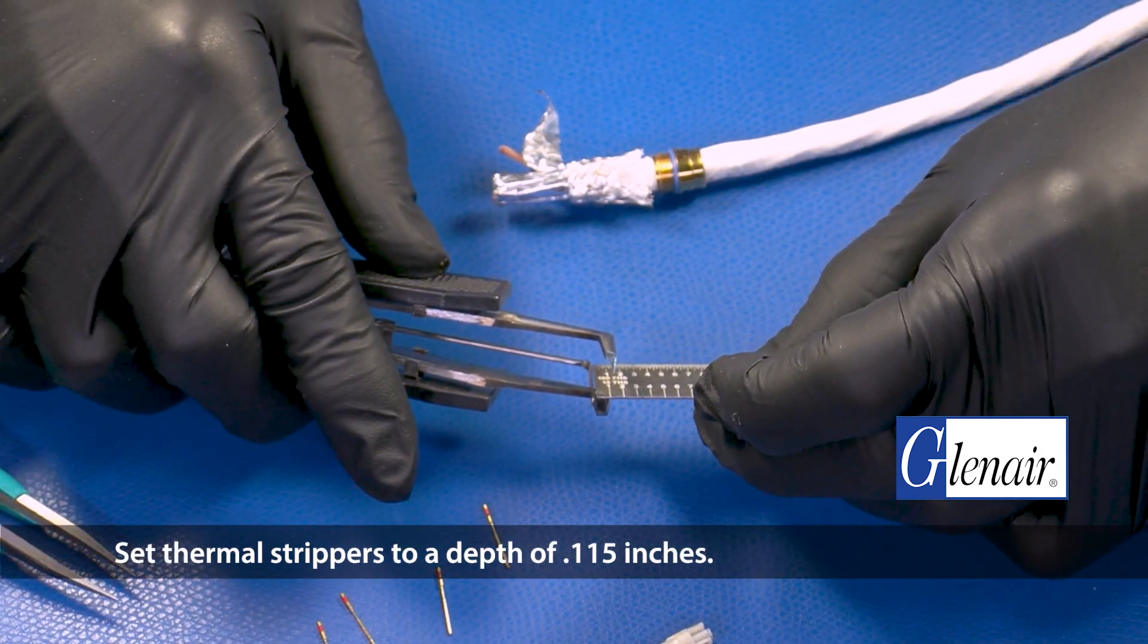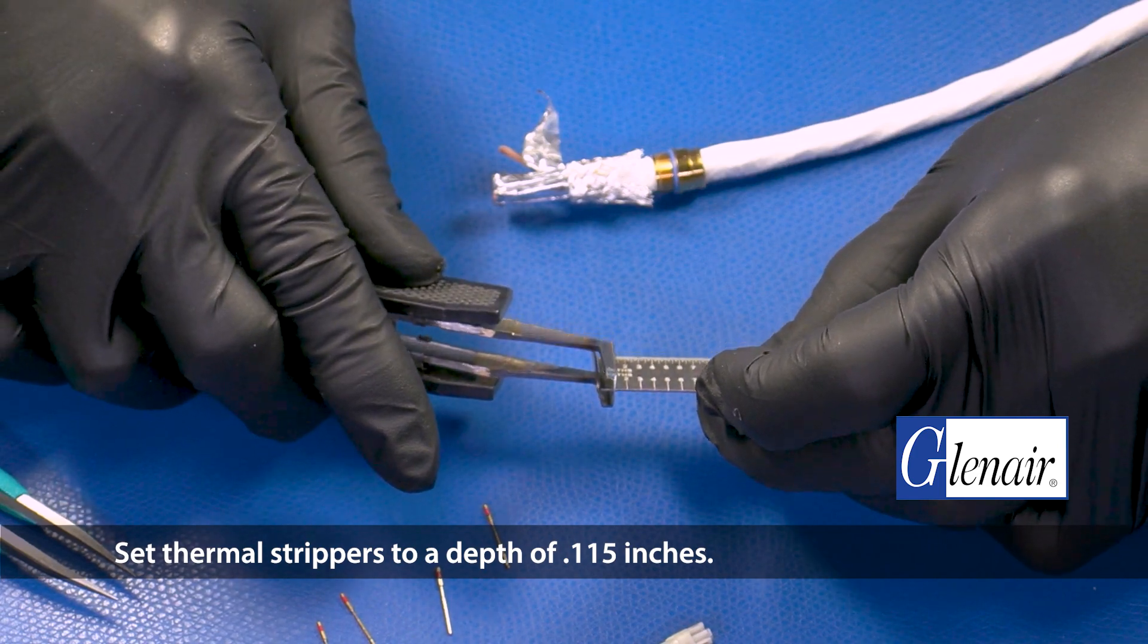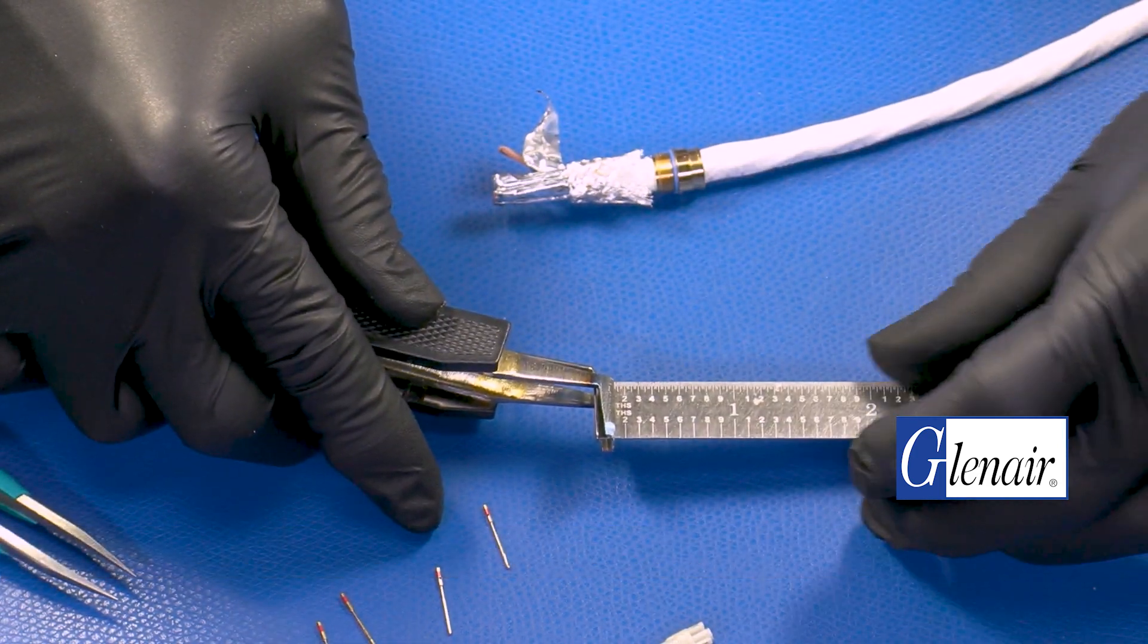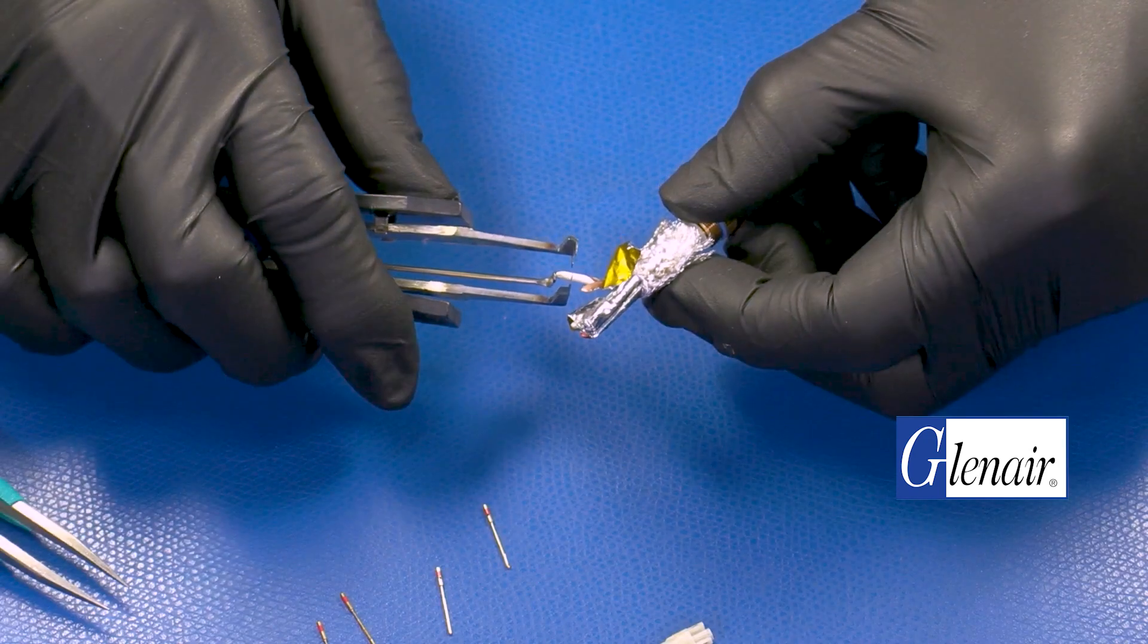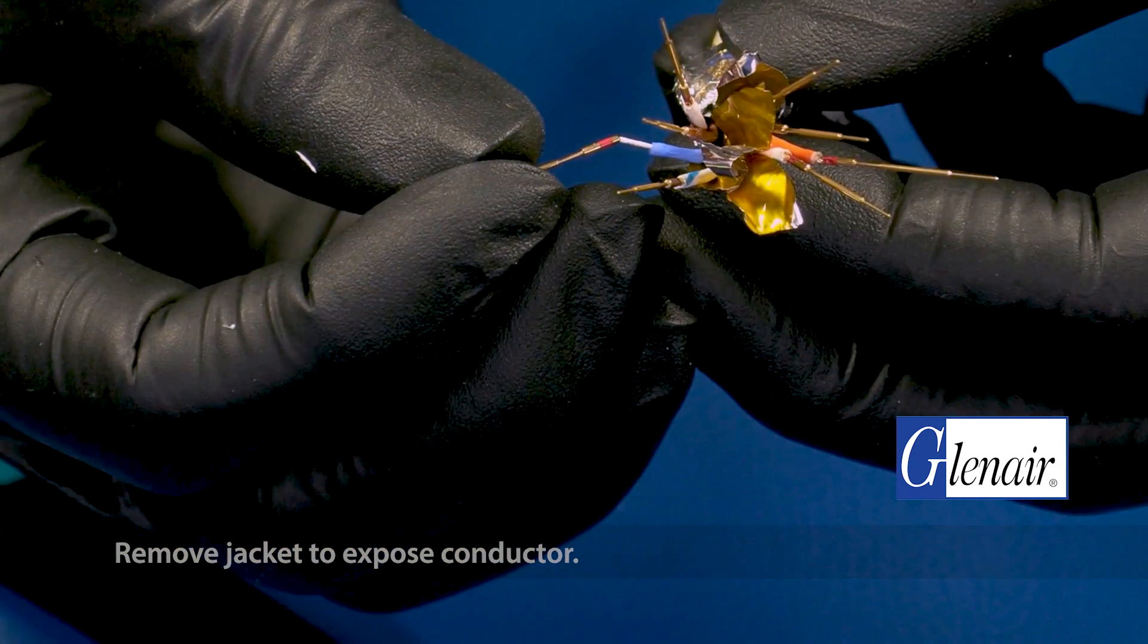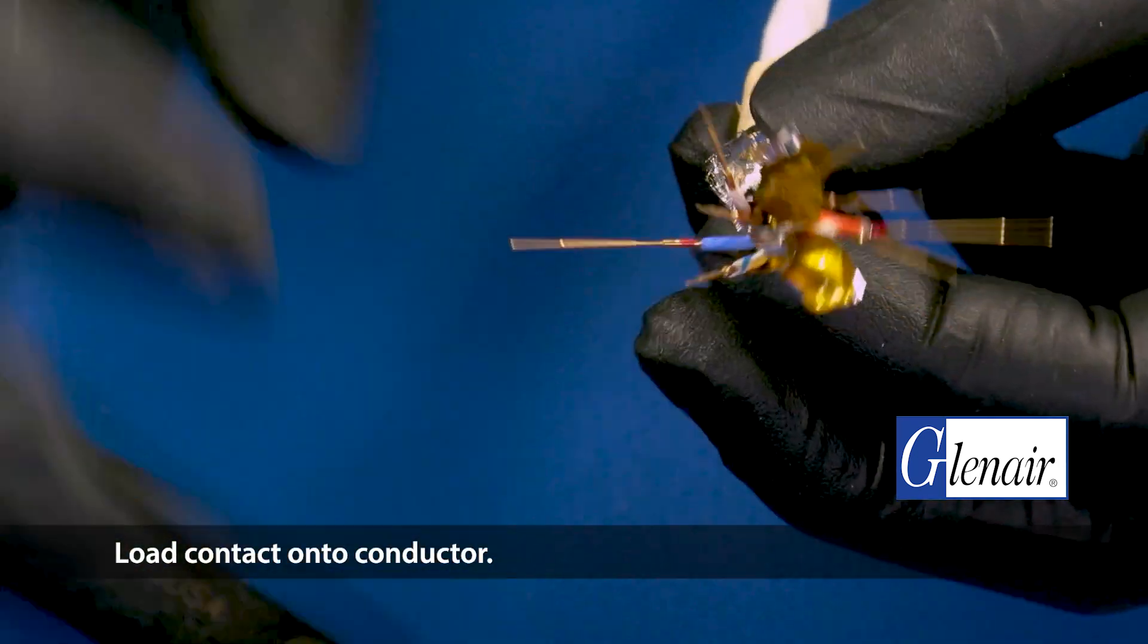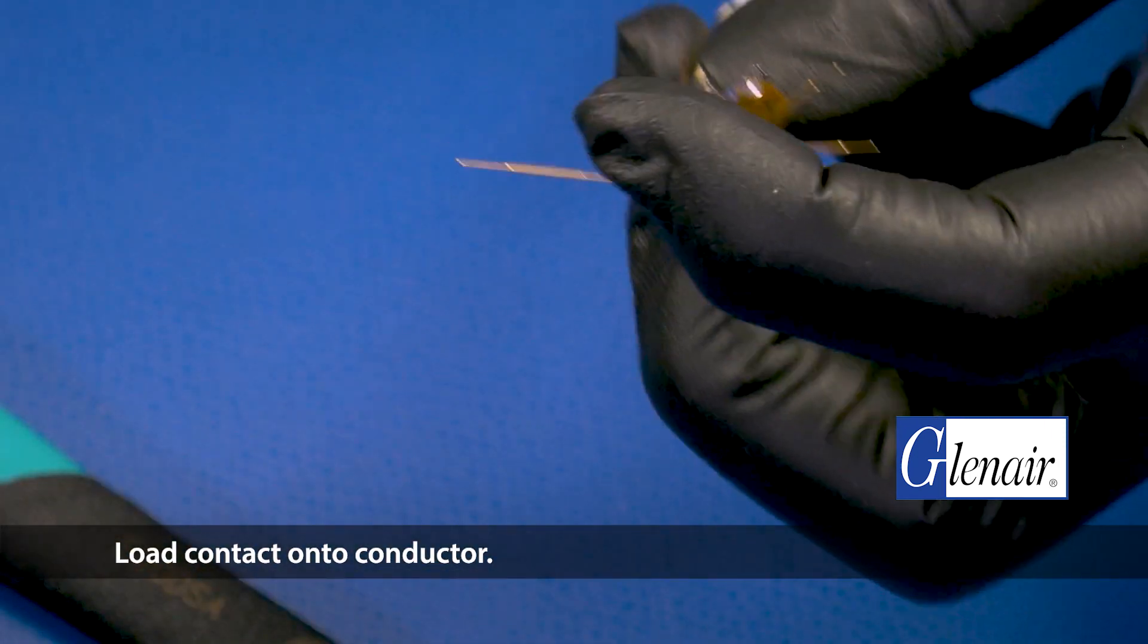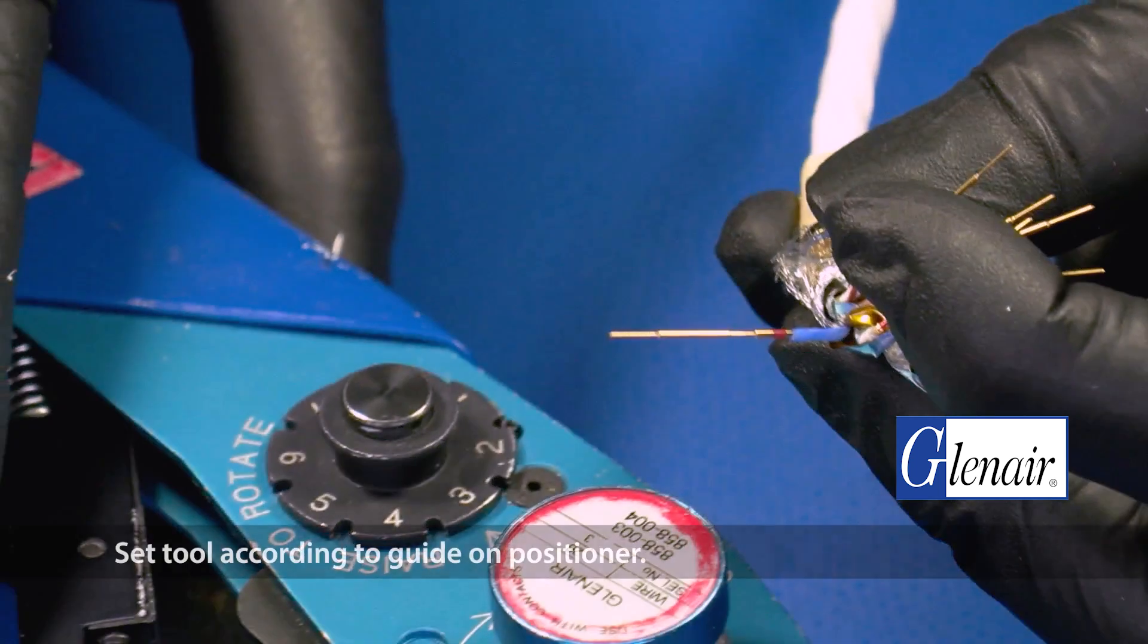Set thermal strippers to a depth of 0.115 inches. Remove jacket to expose conductor. Load contact onto conductor. Set tool according to guide on positioner.